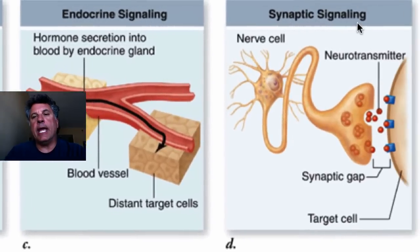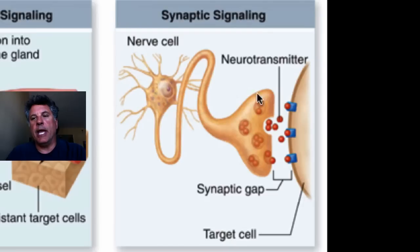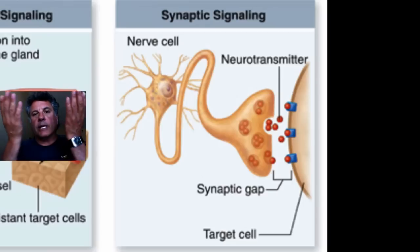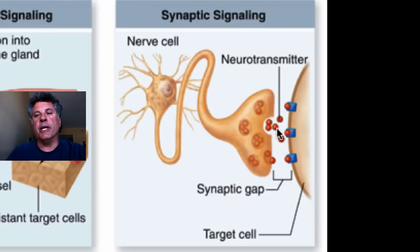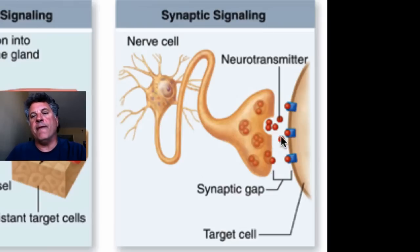Synaptic signaling is a very special type of paracrine signaling. It occurs over very short distances and involves the release of a neurotransmitter from a presynaptic cell that is received by receptors on the postsynaptic cell. That reception is usually transduced either into increased electrical excitability — causing the postsynaptic cell to fire an electrical signal — or in an inhibitory case, decreased electrical excitability. Neurotransmitters can be inhibitory or excitatory, and they traverse a very narrow synaptic gap or synaptic cleft.